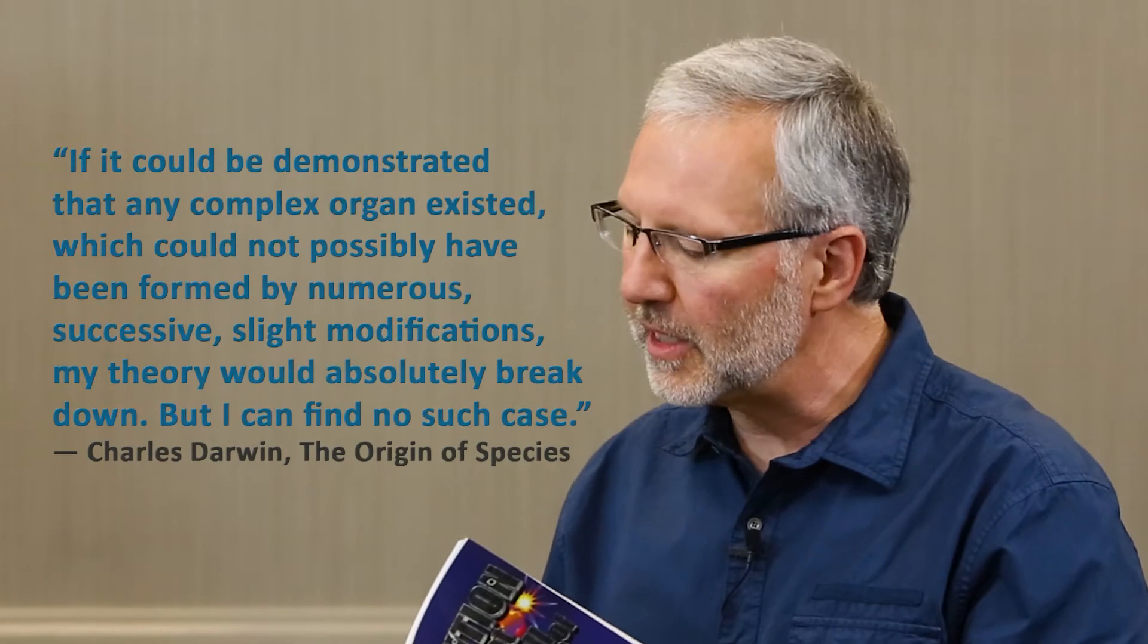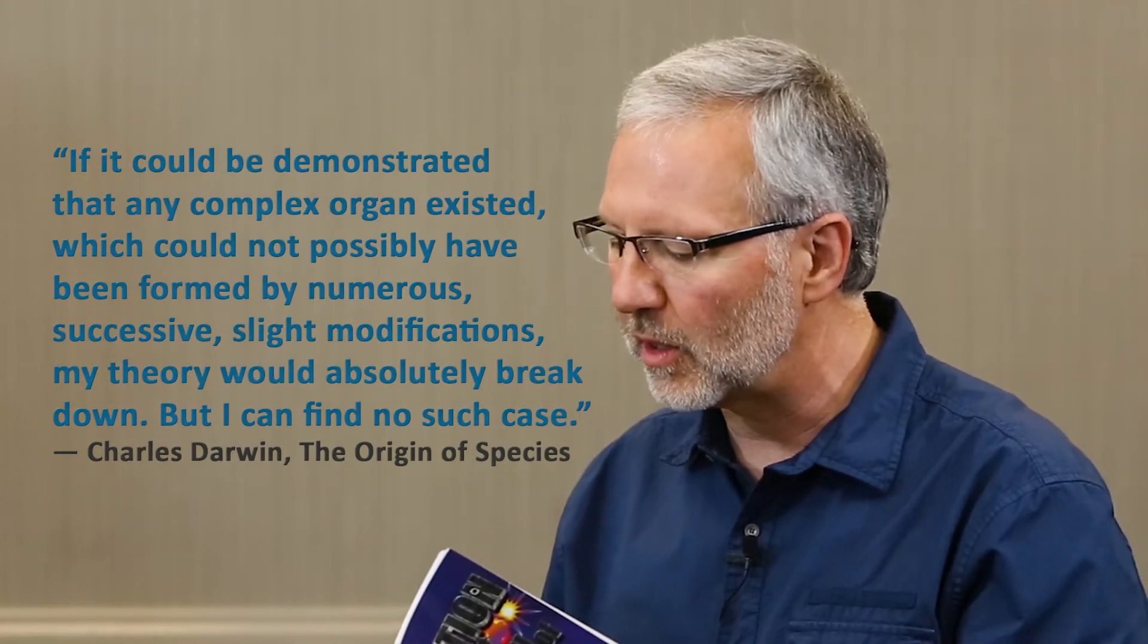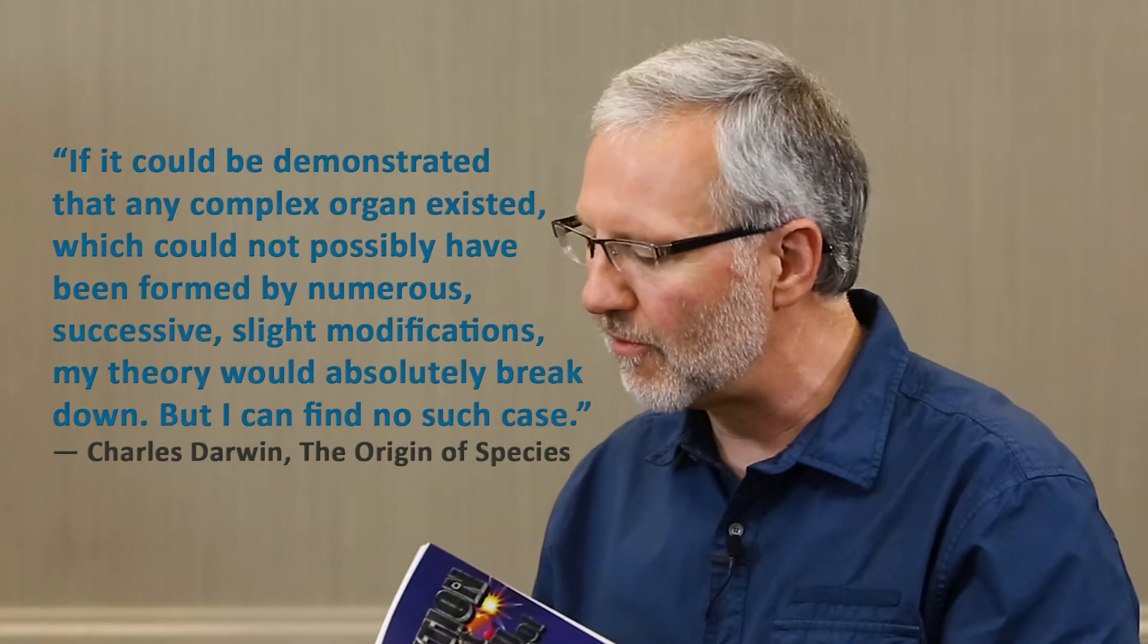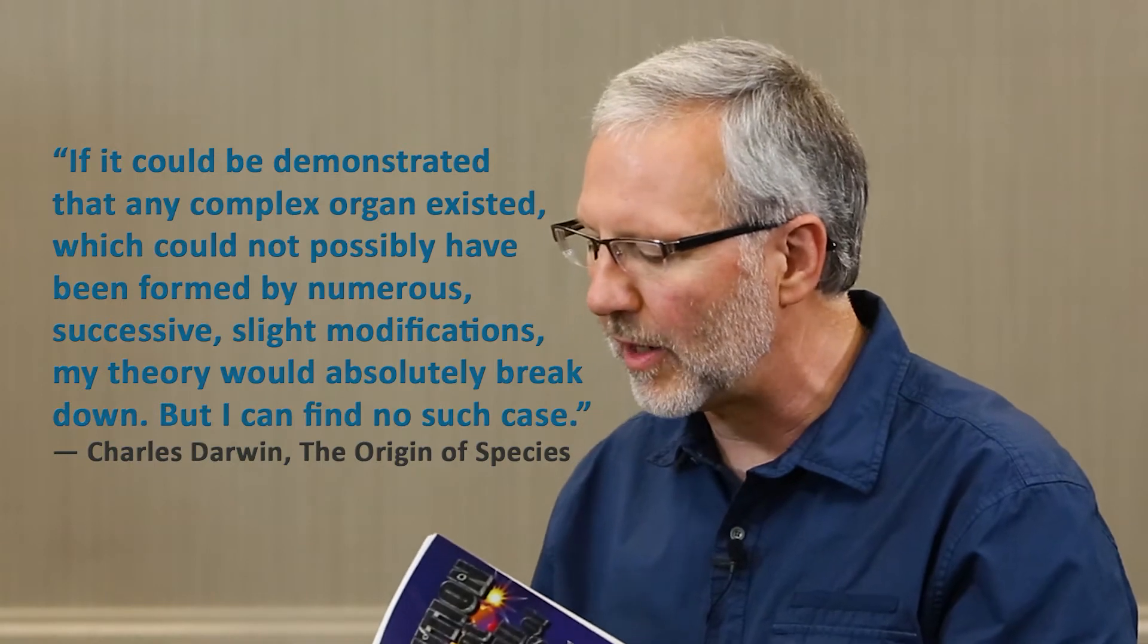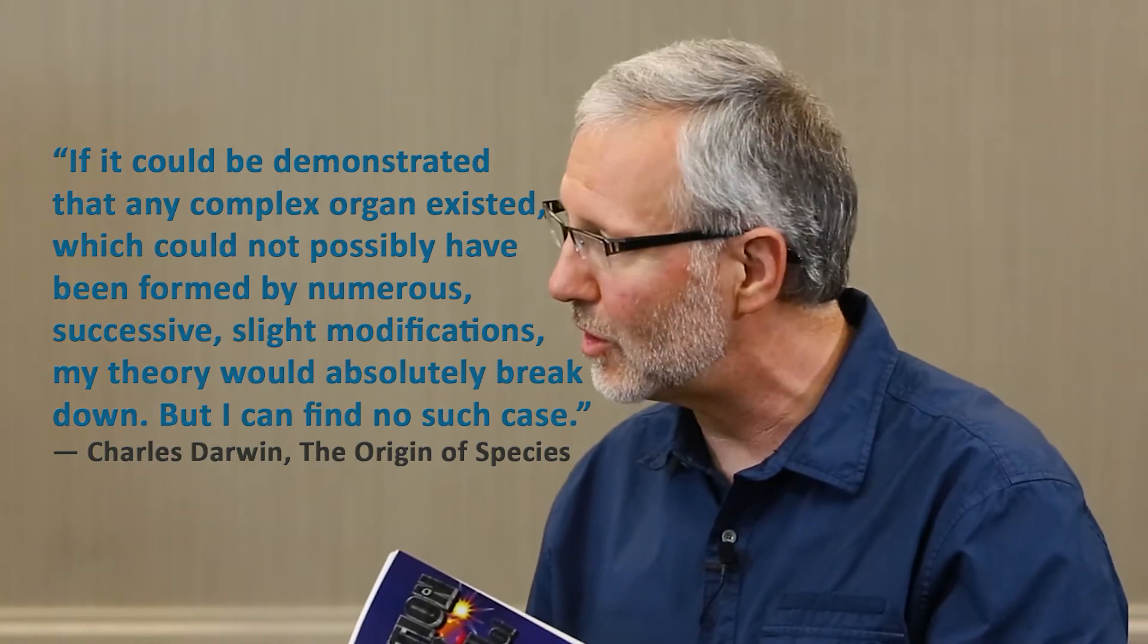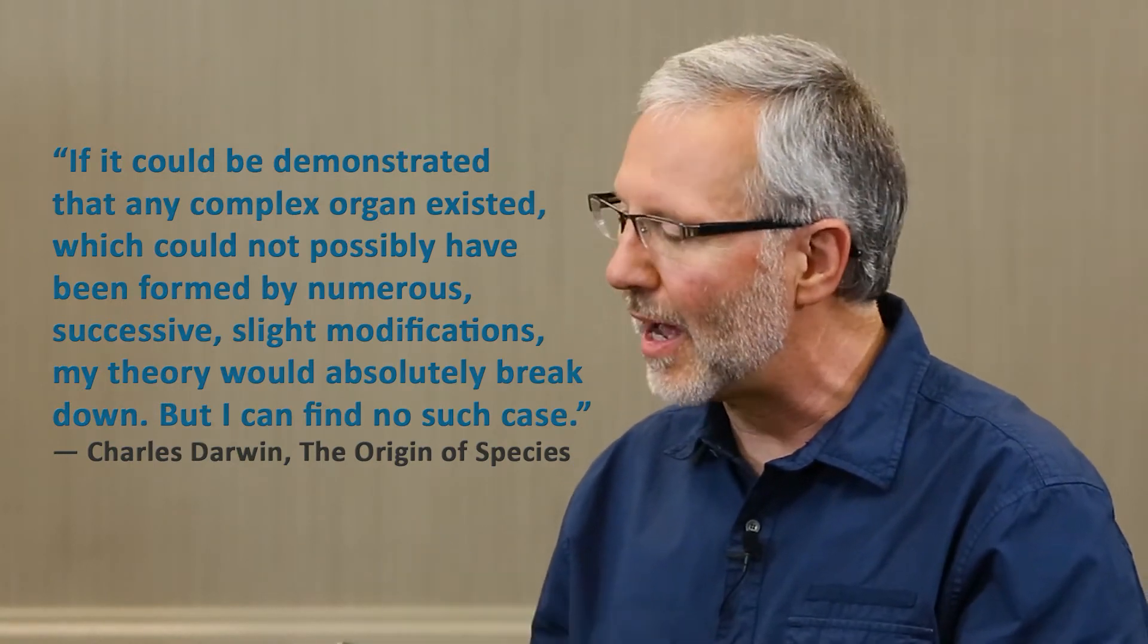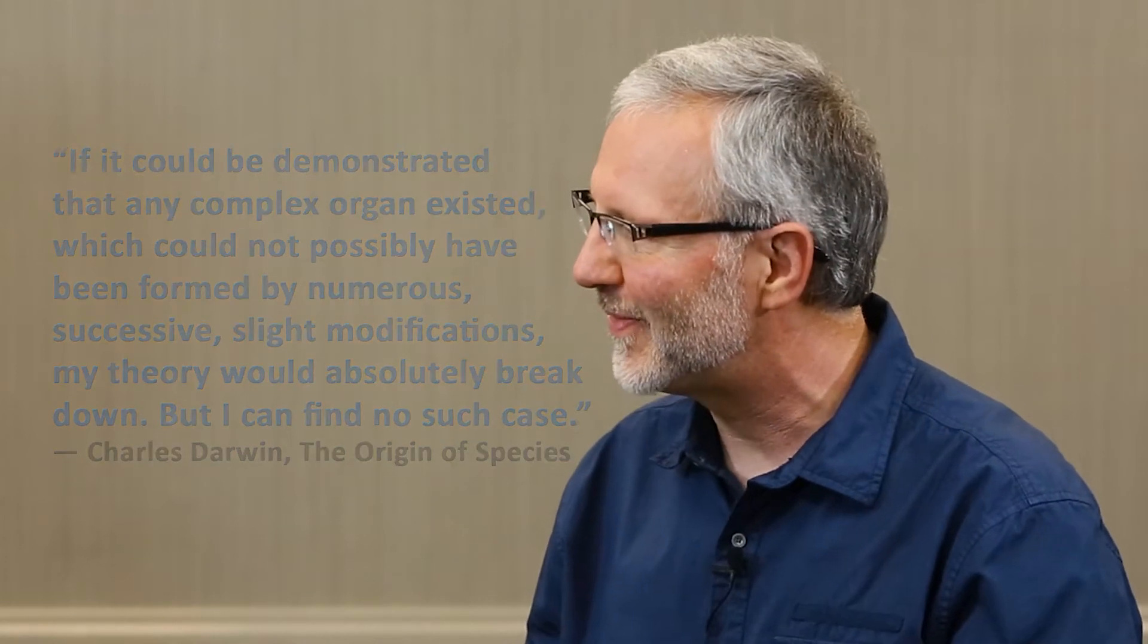So Charles Darwin wrote in his book On the Origin of Species: If it could be demonstrated that any complex organ existed which could not possibly have been formed by numerous successive slight modifications, then my theory would absolutely break down.